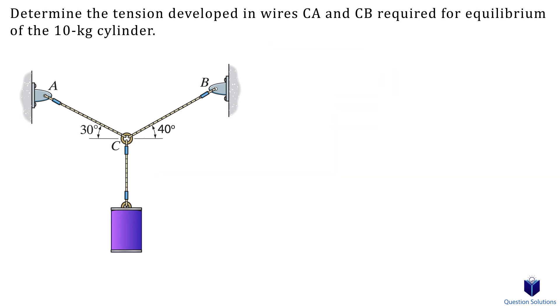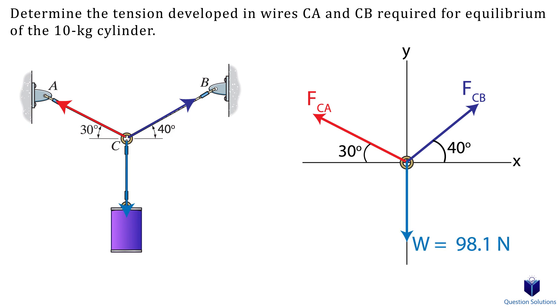Now let's move on to some examples to see how we can solve for unknown forces. Let's take a look at this problem where we have a cylinder in equilibrium. We need to figure out the tension developed in the wires CA and CB. The first step is to pick our point where we will write out equations of equilibrium. For that, we will pick point C. Now we draw our coordinate system with the x-axis and the y-axis. Next, we can draw our forces. We have a force in the cable CA, a force in cable CB, and we have the weight of the object downwards. The weight is the mass of the object times the acceleration due to gravity. So that would be 98.1 newtons.